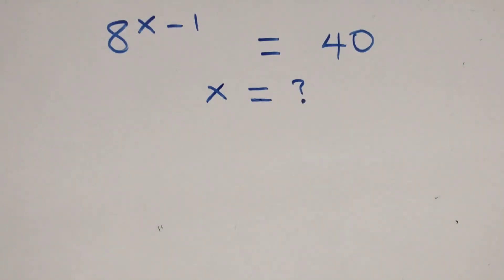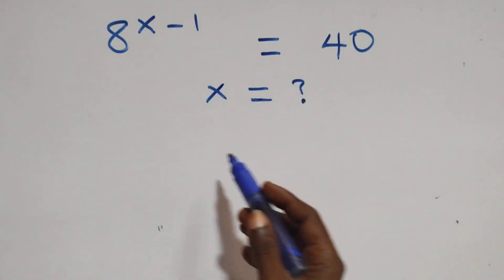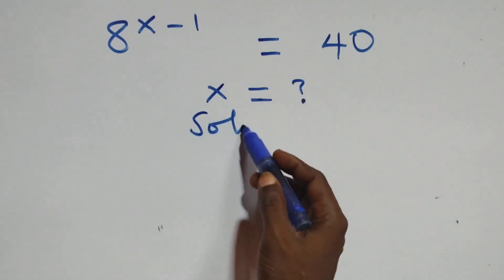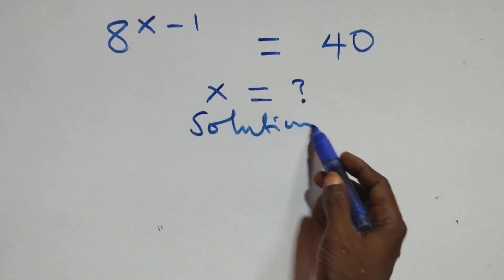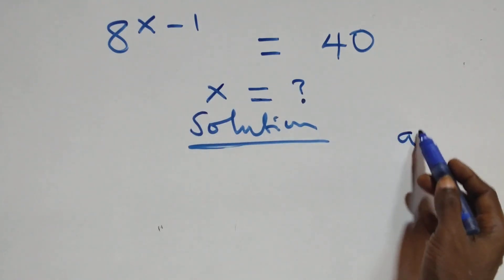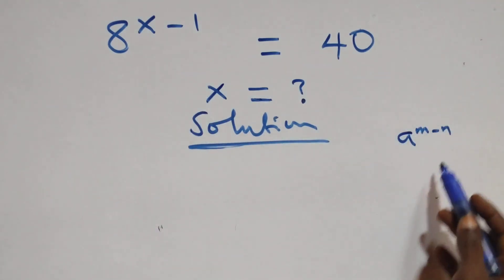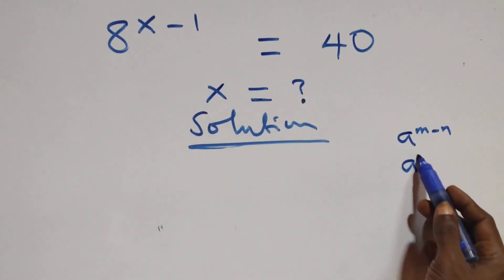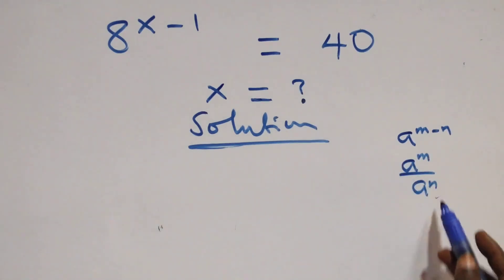Hello, you're welcome. How to solve this nice exponential equation. The rule we use here: a raised to power n minus n is the same thing as a raised to power n over a raised to power n.